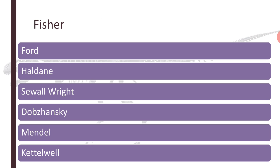Fisher and Haldane are other scientists in the list. Haldane coined the term primordial soup. Sewell Wright proposed the Sewell Wright effect, also called genetic drift, which was already covered in a previous lesson. Dobzhansky coined the term Mendelian population. Gregor Mendel himself proposed various theories of inheritance, and these theories, knowingly or unknowingly, supported Darwinism. Kettlewell is another scientist who explained the process of natural selection by taking the Biston betularia moth as an example.